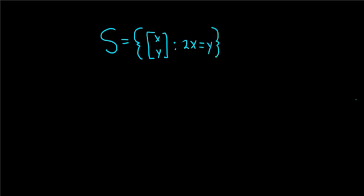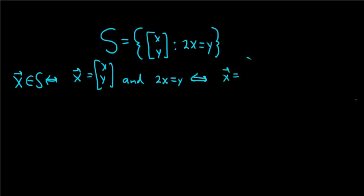So first, let's see what a vector looks like here. So if we have a vector X in S, that means that X is equal to [X,Y] and 2X is equal to Y. So let's use this to rewrite stuff. So I'm going to put a biconditional arrow here. So X is in S is the same as saying this, which is the same as saying, well, Y is 2X, right? So this is the same as saying that X is equal to the vector [X, 2X].